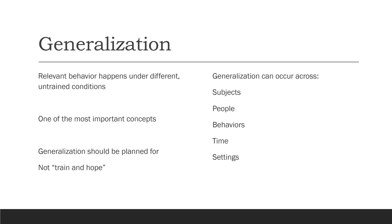So what is generalization? Relevant behavior happens under different untrained conditions. We teach a behavior in a setting — a clinic, a house, a classroom — and that behavior goes out to the world. You teach a student the color red; they go out in the world and they can identify red fire trucks, red fire hydrants, red stop signs, red everything. That trained behavior is now happening under multiple conditions. It's one of the most important concepts in ABA. If we're not generalizing, we're not doing our jobs correctly.